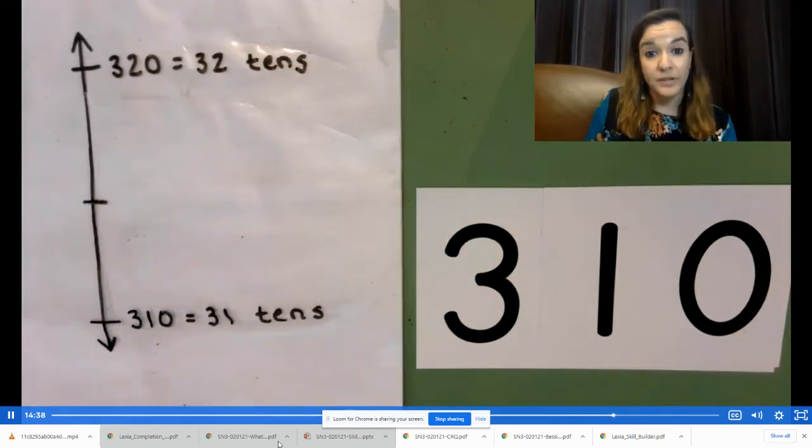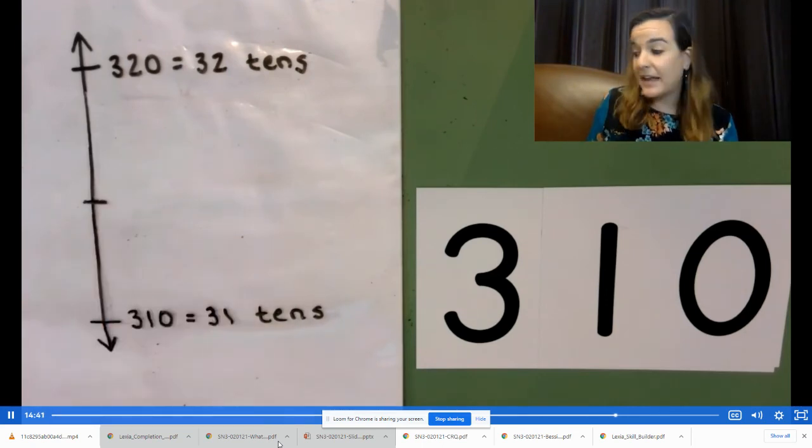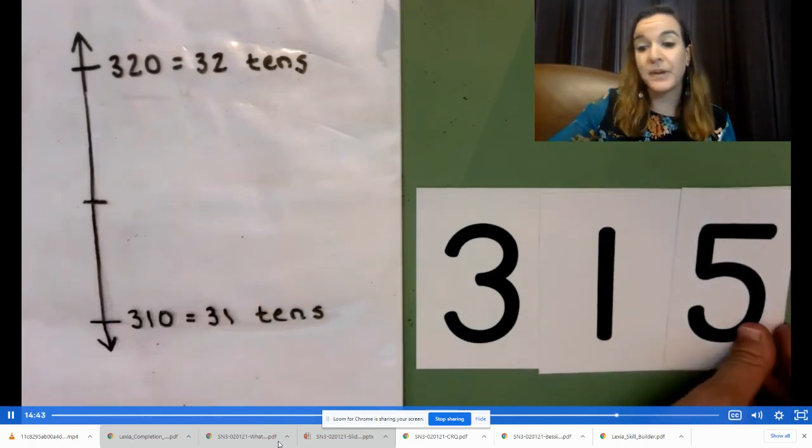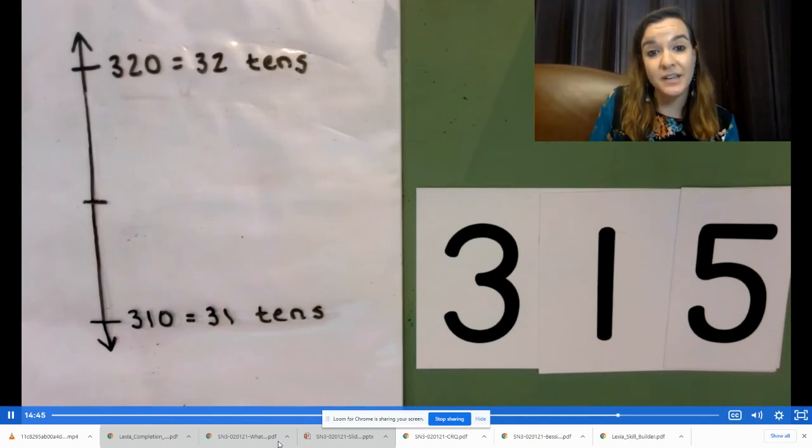Now, on your own, find the halfway point and round 315 milliliters to the nearest 10 milliliters. Pause the video to do that now.